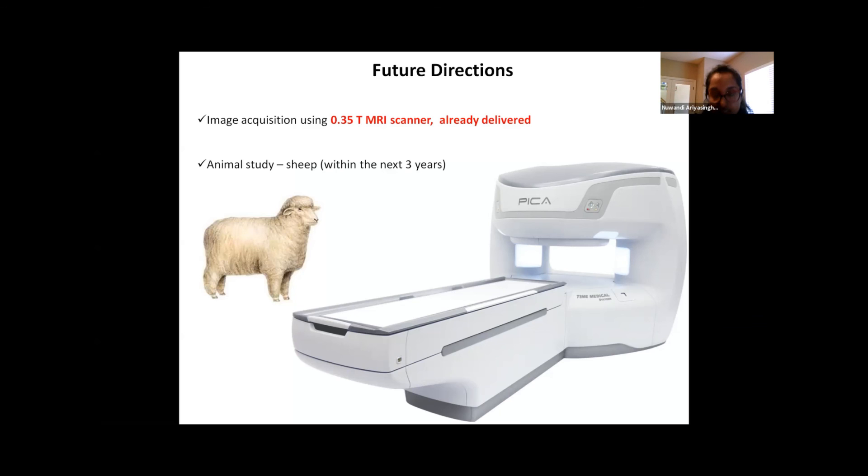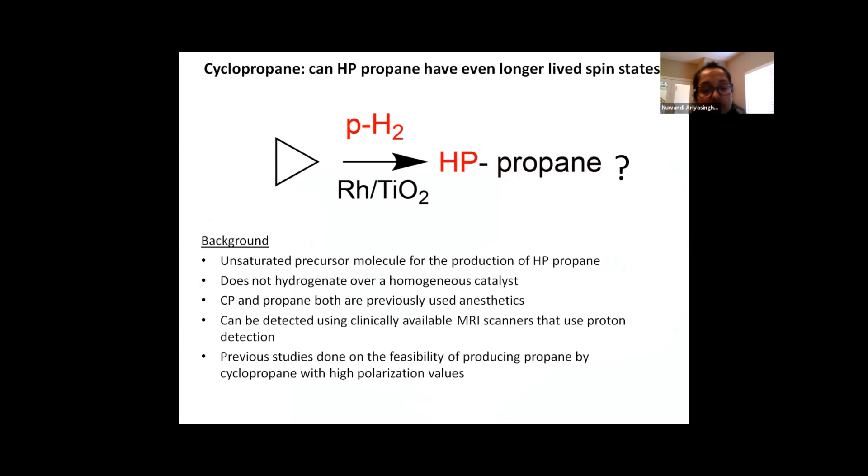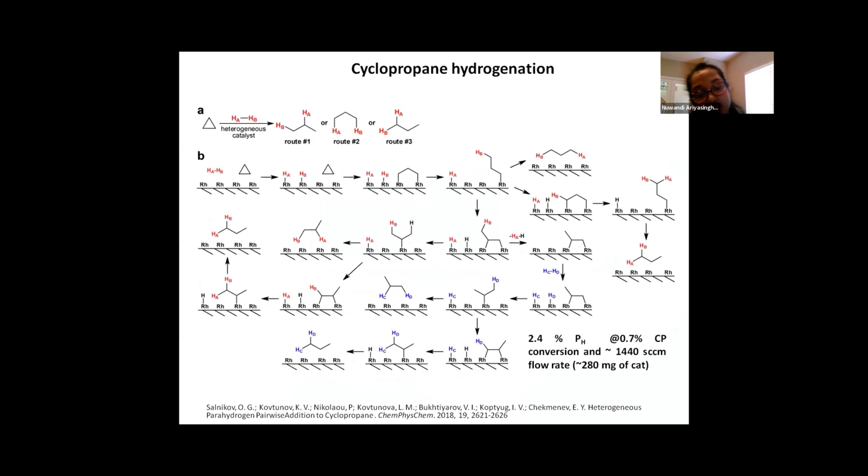And on a separate note, we were trying to think if there is a way that we can create even longer long-lived spin states of hyperpolarized propane. So we switched to cyclopropane. And cyclopropane has been shown to produce hyperpolarized propane with high polarization values before. And this does not undergo hydrogenation over homogeneous catalyst. So this work which was done by Oleg and co-workers on the heterogeneous hydrogenation of cyclopropane shows three different products which can occur from three different reaction routes. But two of those are symmetric states, therefore NMR invisible, and only one product can be detected by NMR.